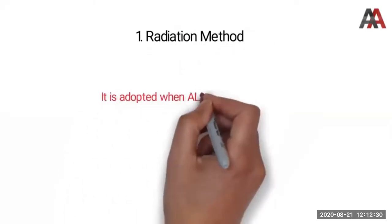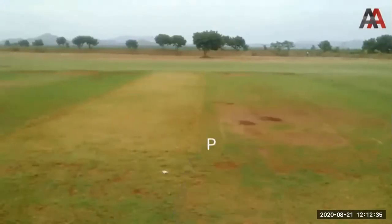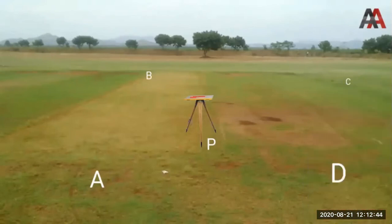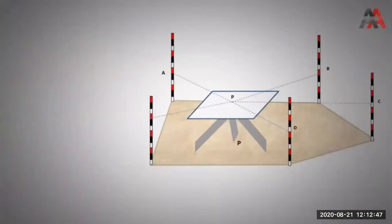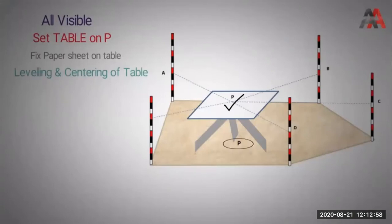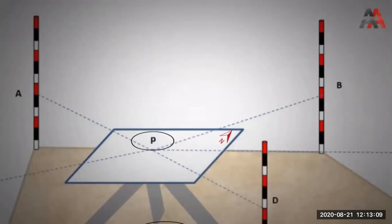We adopt the radiation method when we plot all the points from a single station. For example, our station is point P. We have set up the plane table there. Points A, B, C, D are on the ground and we have to plot them on paper. I will set up the plane table on the ground, fix the paper sheet on the table, then level and center the table. I will represent station P on the paper, mark the north direction in the top right corner.